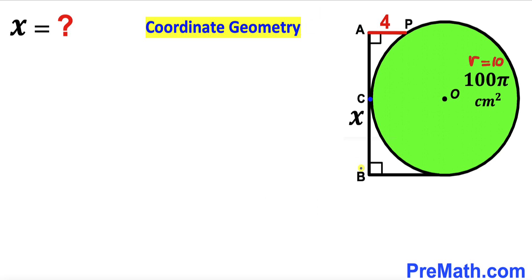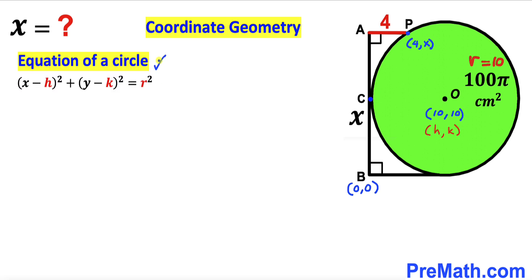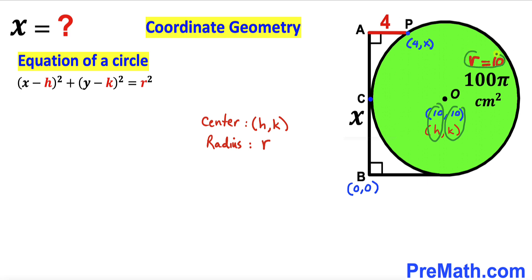For the second method using coordinate geometry, let's assume point B is the origin at (0, 0). Then point P is at (4, x). Since the radius is 10, center O is at (10, 10). Recalling the equation of a circle: (x − h)² + (y − k)² = r², where the center is (h, k) and radius is r. Here h = 10, k = 10, r = 10, and point P on the circle is (4, x).